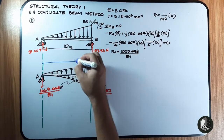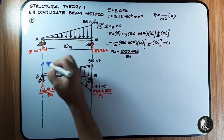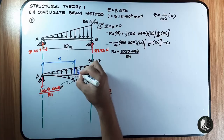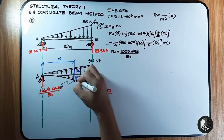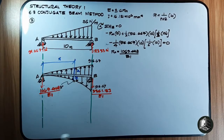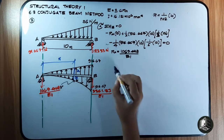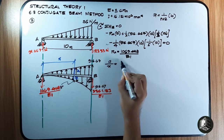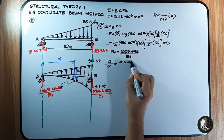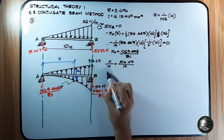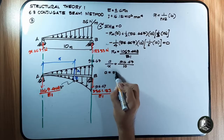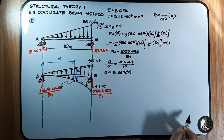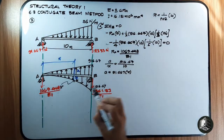Now let's locate the maximum deflection. Let distance x be measured from A to B. Using similar triangles, a/x = 916.67/10, therefore a = 91.667x.